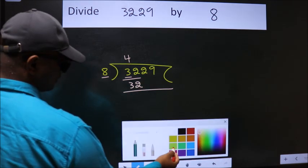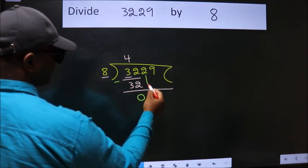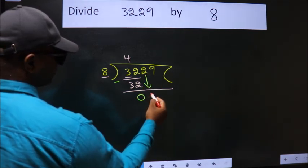Now we should subtract. We get 0. After this bring down the beside number. So 2 down.